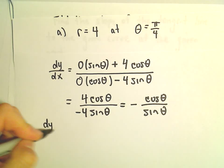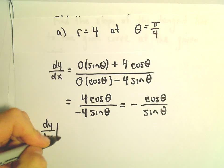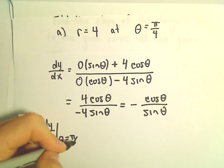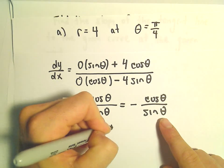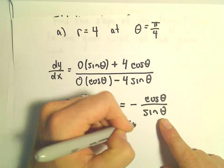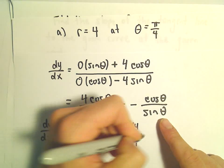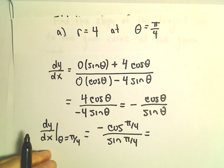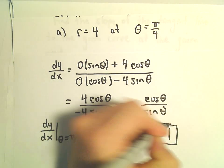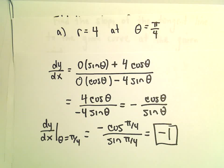And if we want to evaluate the slope of the tangent line at theta equals pi over 4, all we have to do is plug it in. So we'll get negative cosine of pi over 4 over sine of pi over 4. Well, cosine of pi over 4 and sine of pi over 4 both equal square root of 2 over 2, so we're just going to be left with negative 1 as the slope of our tangent line.